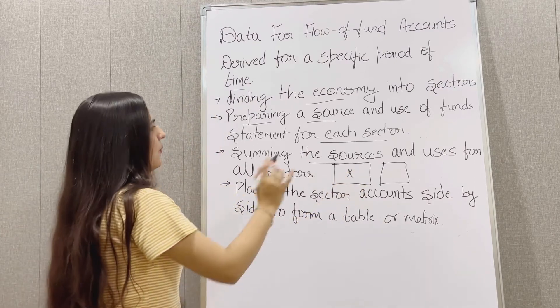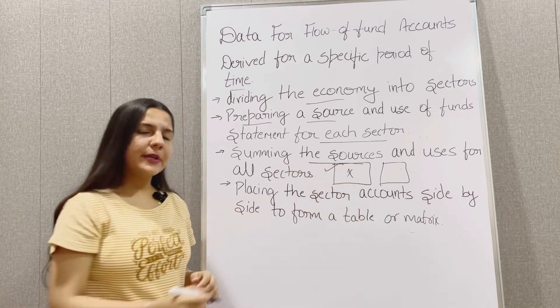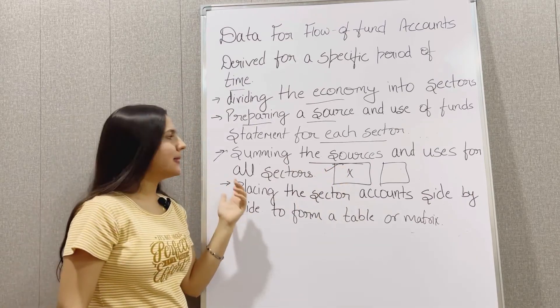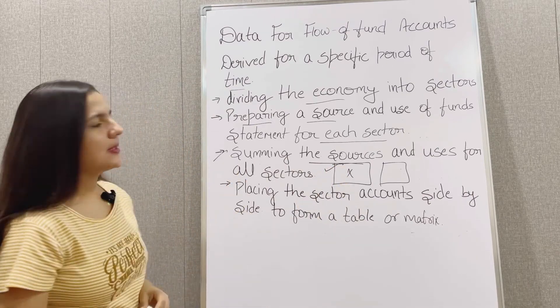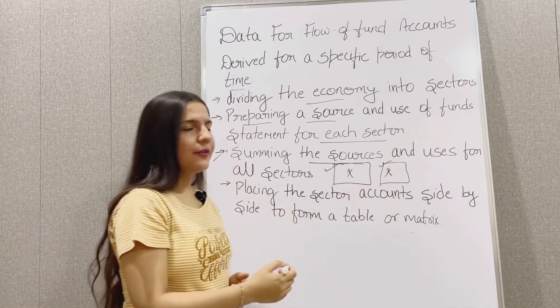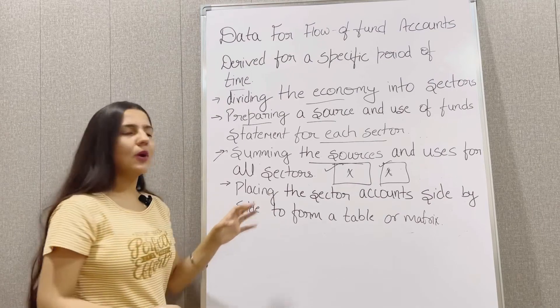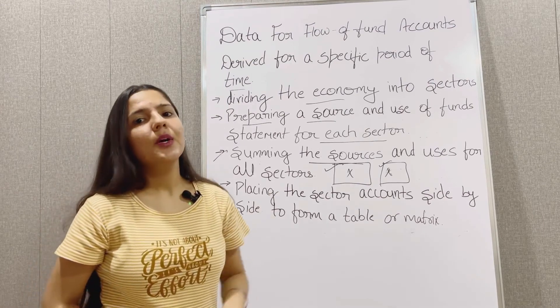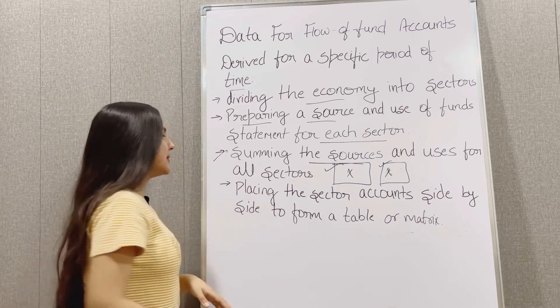So in first step, what we did? We prepared a fund statement for this sector. Now in next step, we'll sum up all the sources and uses for the sector. In this particular sector also we'll have a fund statement and this also in all the sectors we are going to have fund statements according to those sectors.